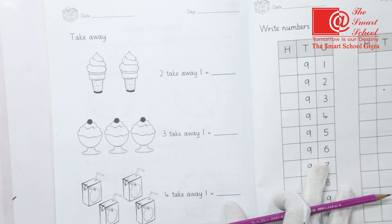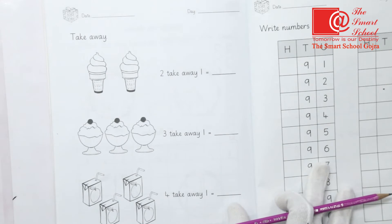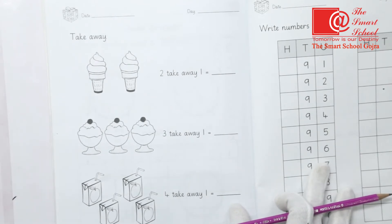If your mother gave you 50 rupees and said you have to pay 20 rupees in school, when you pay those 20 rupees you need the concept of subtraction to know how much is left — 50 minus 20 leaves 30 rupees remaining.